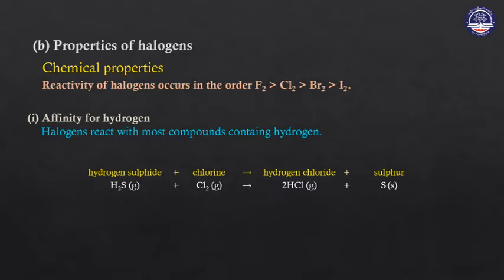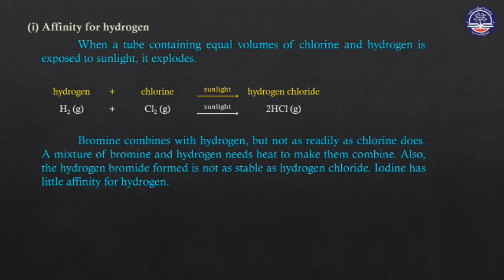Affinity for hydrogen: hydrogen fluoride is number 1. Halogen combined with hydrogen — this is the equation. Hydrogen fluoride, hydrogen chloride — chlorine and hydrogen combine to form HCl.